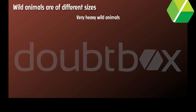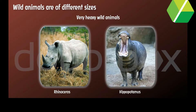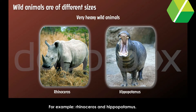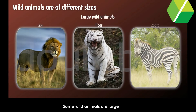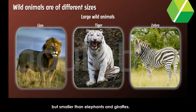Very Heavy Wild Animals. Some wild animals are very heavy, for example rhinoceros and hippopotamus. Large Wild Animals. Some wild animals are large but smaller than elephants and giraffes, for example lion, tiger and zebra.